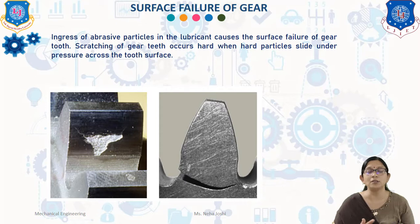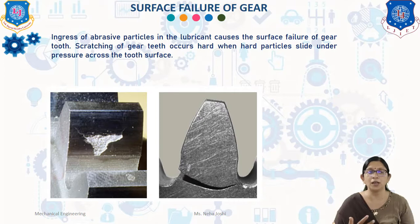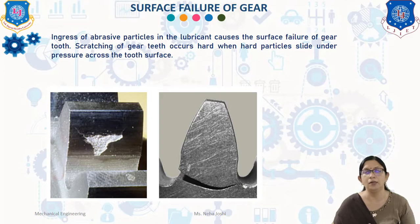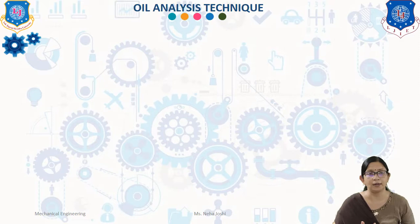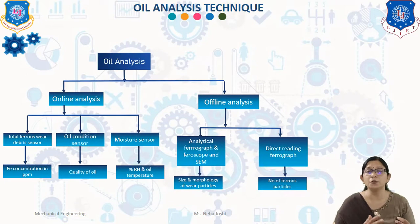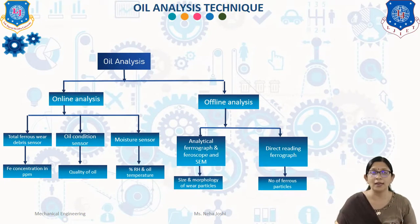Scoring is sometimes known as scuffing. Solid lubricants, liquid lubricants with EP additives, and profile modification are a few methods to prevent surface failure or scoring of the gear teeth. Now we will discuss the oil analysis technique. There are two methods for oil analysis: online analysis and offline analysis.